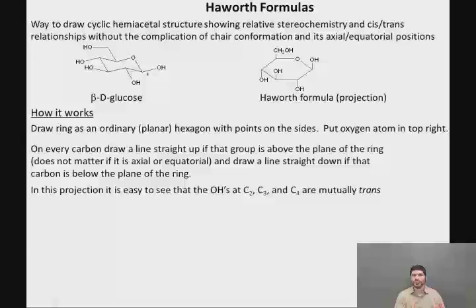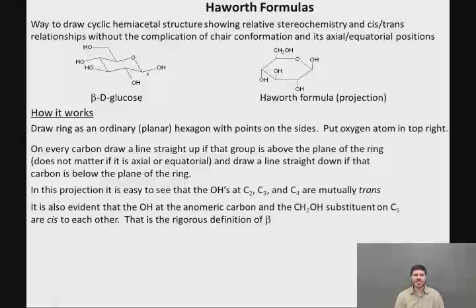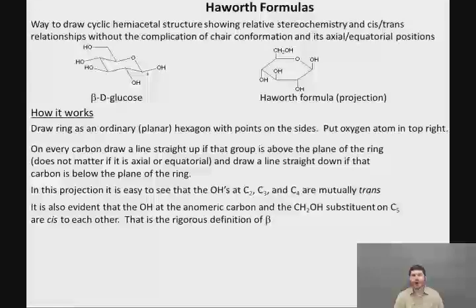This projection is most useful for showing cis and trans relationships, especially at the anomeric carbon. Because it's also evident that the OH at the anomeric carbon and the CH2OH substituent on C5 are cis to each other, and that is the rigorous definition of beta.